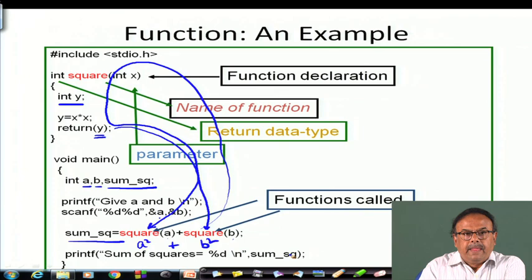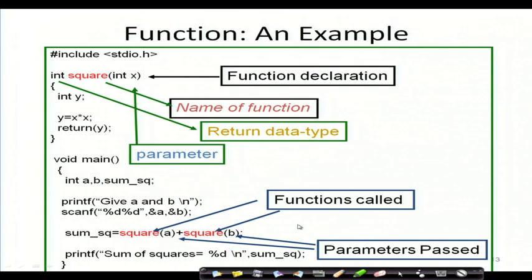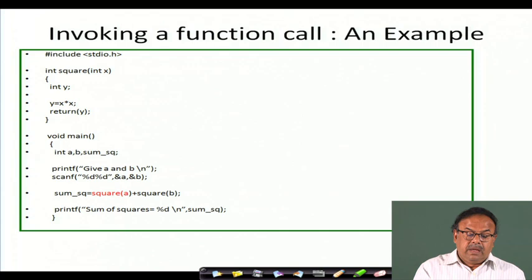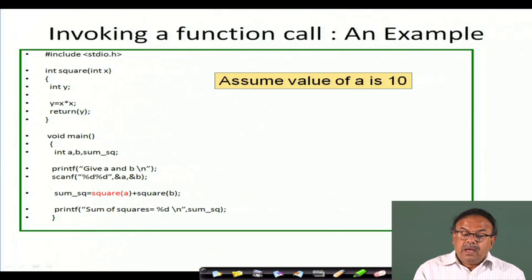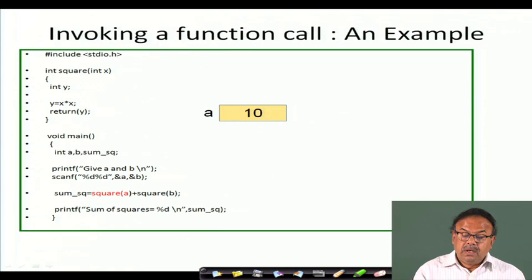You can also try to trace the flow of data in such cases. These are the parameters passed and here is the argument. When invoking a function call, let us see what happens to the variables. Assume the value of a that has been read is 10. Then square of a means square of 10, so 10 goes to x — a is 10, and x becomes 10.